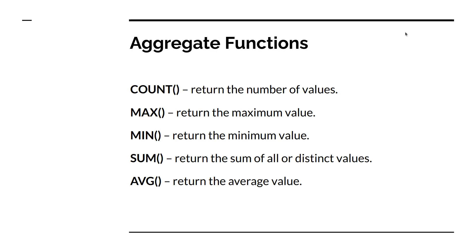MIN works just opposite to MAX — it returns the lowest value. SUM returns the sum of all values of a specified attribute, and can also return the sum of distinct values. AVG returns the average value of the mentioned column. Now let's start using these aggregate functions one by one.